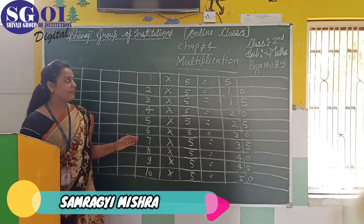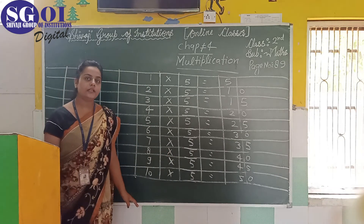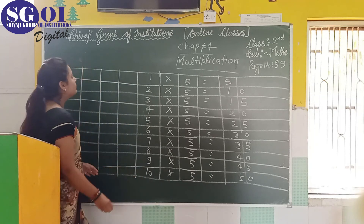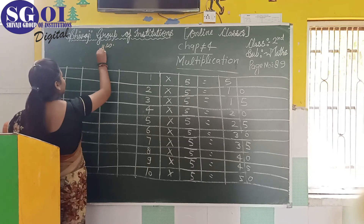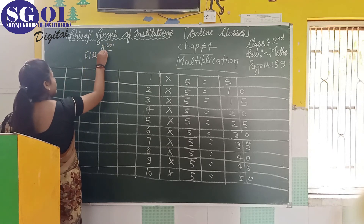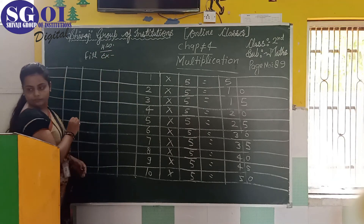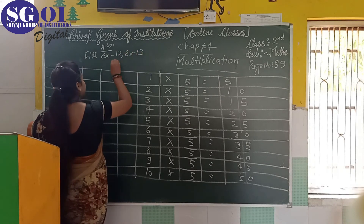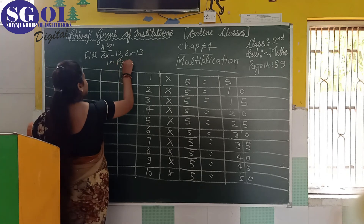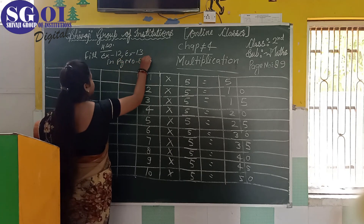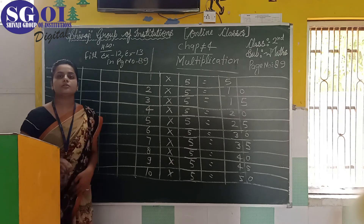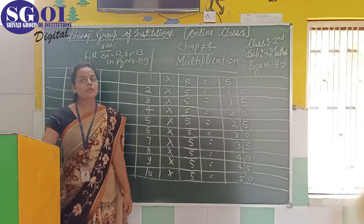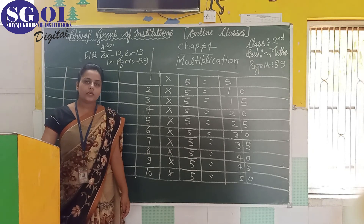Now I have completely covered exercise number 12 and 13, and I showed it here but you have to fill it in the book as your homework. So your homework is to fill in the blanks: exercise number 12, exercise number 13, on page number 89. So this is all about today's class. We will continue our next class with new exercises. Keep doing the work. Thank you all for attending today's class.